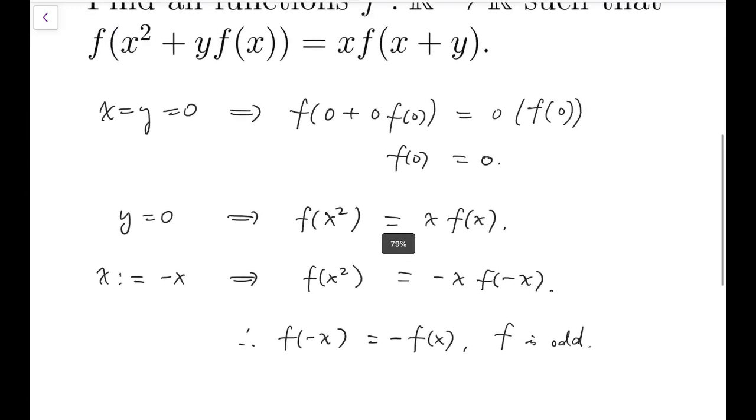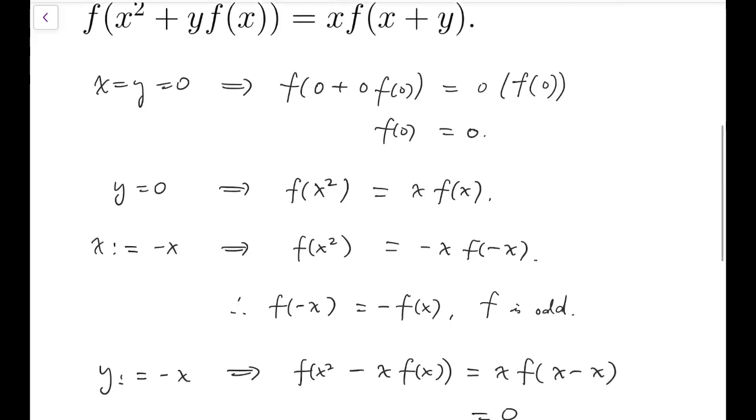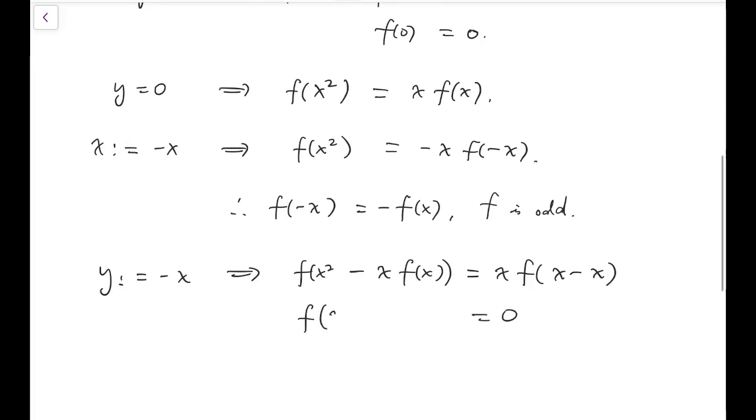Now given that f is odd, then we can try to replace y by minus x and see what we'll get. f of x squared minus x times f of x will equal to x times f of x minus x, which equals zero. So now we have f of another term that is being zero.